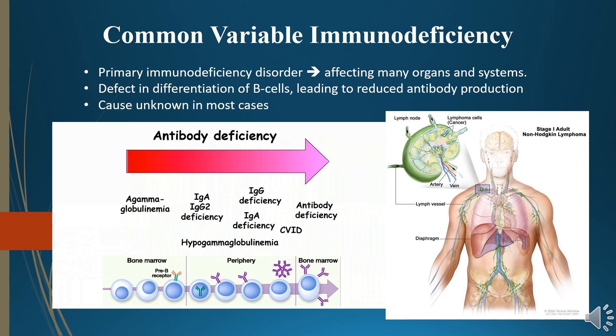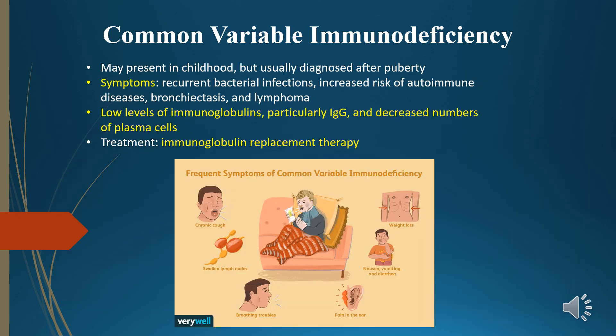The cause is unknown in most cases. Common variable immunodeficiency may present in childhood, but is usually diagnosed after puberty. Symptoms include recurrent bacterial infections, increased risk of autoimmune diseases, bronchiectasis, and lymphoma.